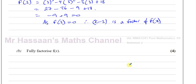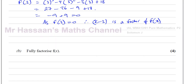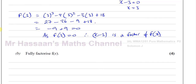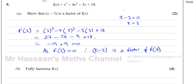Now part B says fully factorize f(x) = x cubed minus 4x squared minus 3x plus 18. There are a couple of methods you could use. The most common would be algebraic long division. We could also continue using the factor theorem and try different factors — for example, x equals 2, minus 2, 1, or 6. But because there are quite a few that could give you 18, it's probably better to use algebraic long division.